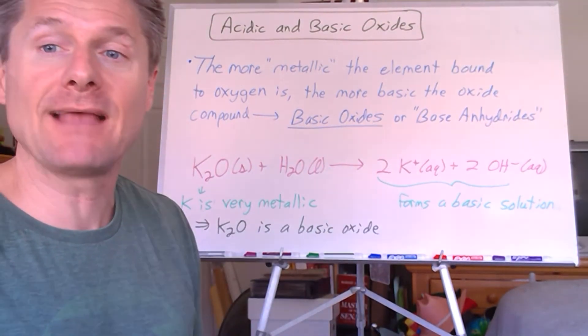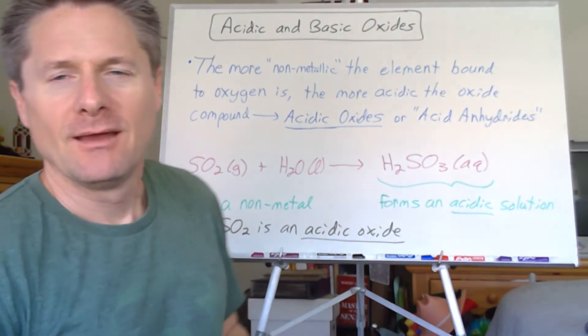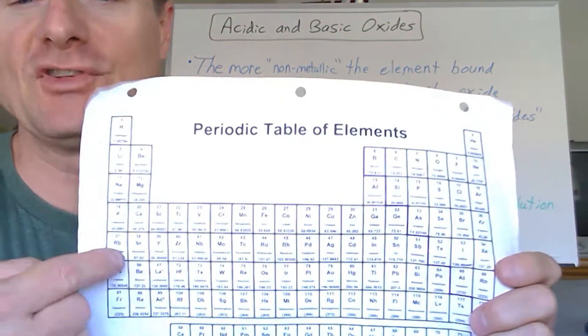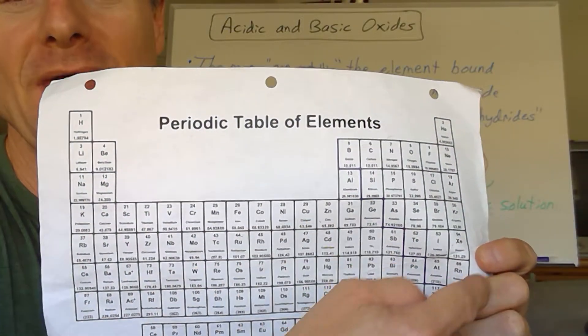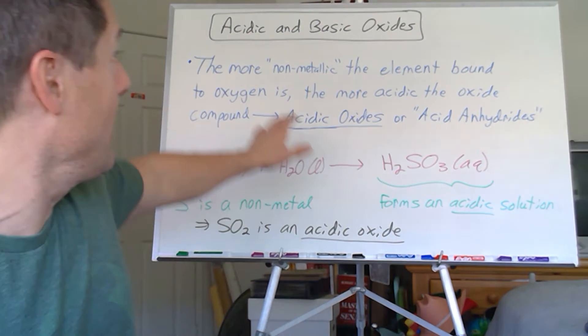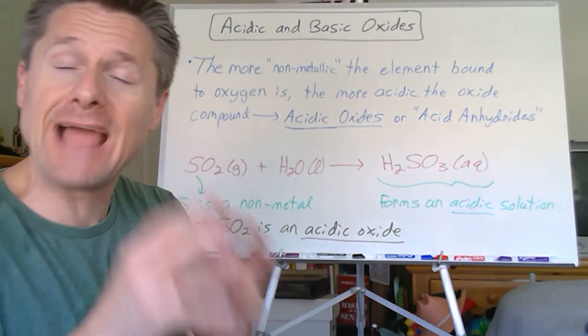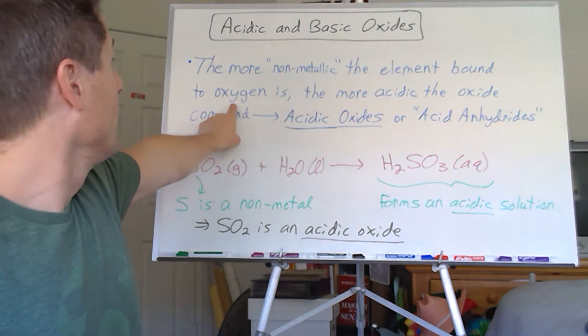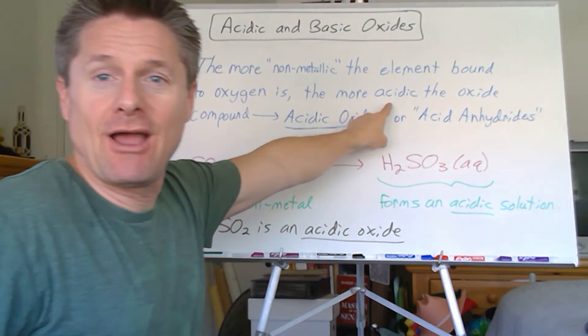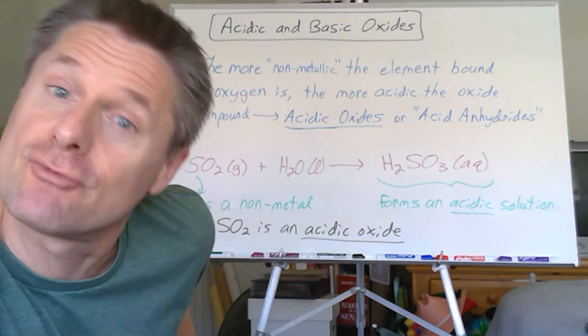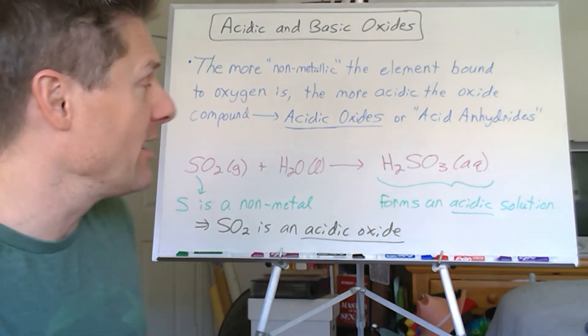All right, let's look at some non-metal oxides. Looking the same way we did with metals, metal oxides being basic, we should predict that non-metal oxides would be the opposite or acidic, right? So the more non-metallic the element bound to oxygen is, the more acidic the oxide is. We call them acidic oxides or acid anhydrides. You might run into that in O-chem quite a bit.